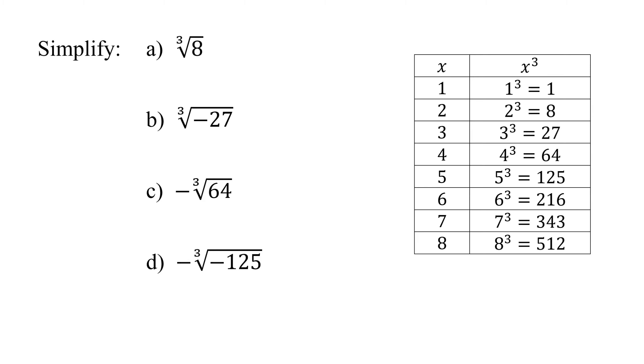So here's a table with x in it and then x cubed. So here are the first eight perfect cubes. So let's look at our first example, the cube root of eight. Remember, what does a cube root mean? It means what number, when multiplied by itself three times, gives me the number underneath the radical sign.